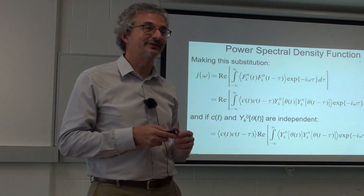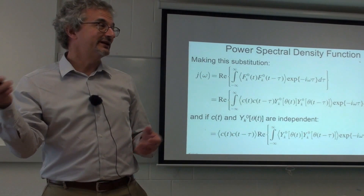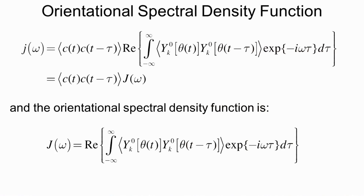We invent a new symbol: capital J of omega is the real part of the Fourier transform of the autocorrelation function for the spherical harmonics only — the spectral density due to orientation alone. Small j will refer to the spectral density that includes both the c's and orientation terms. We can then consider a few simple useful limits. If the c's were constant, we simply have the square of the c's multiplying the orientational spectral density — applicable, for example, to the chemical shift anisotropy Hamiltonian if we treat the CSA as constant.